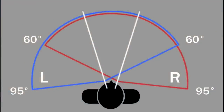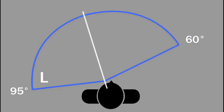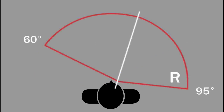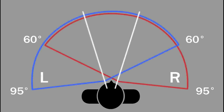Here is a person looking out at their visual world, viewed from above. The blue wedge shows what the left eye sees when the right eye is closed, and the red wedge shows what the right eye sees when the left eye is closed. When both eyes are open, we see both the red and blue wedges. The central area between 60 degrees is seen by both eyes — this is how we get stereoscopic or binocular depth perception.